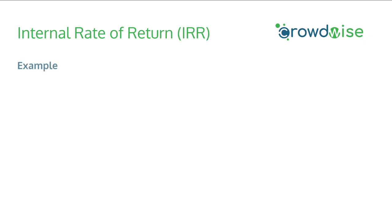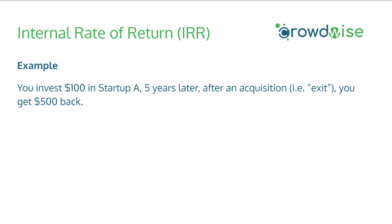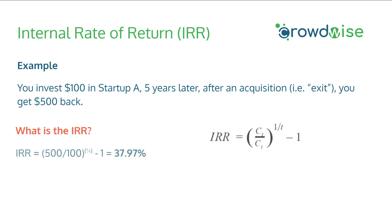Let's do an example to understand IRR better. Going back to the initial example where you invest $100 in startup A — this time, five years later after the acquisition, you get the $500 back. We know that 500 divided by 100 is a 5x exit multiple. Using the equation, we plug in the exit multiple and t equals 5 years for time. Thus, 5 raised to the 1/5 power minus 1 is roughly 38% for the IRR in this situation.